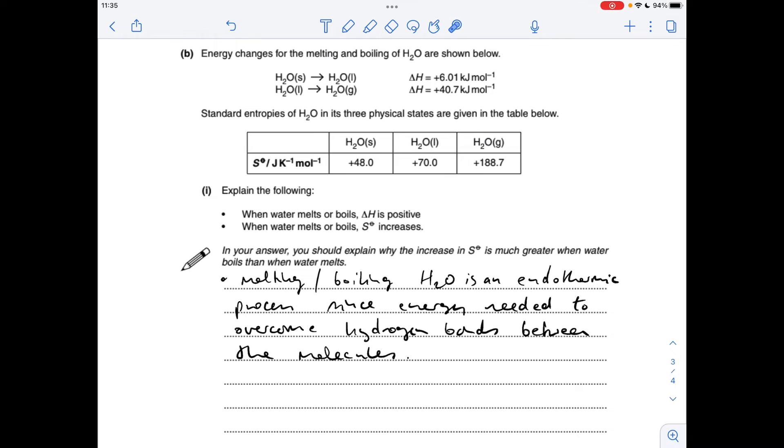So question switches to entropy now. When you melt or boil H₂O it's an endothermic process - the ΔH is positive because energy is needed to overcome the hydrogen bonds or the intermolecular forces between the H₂O molecules.